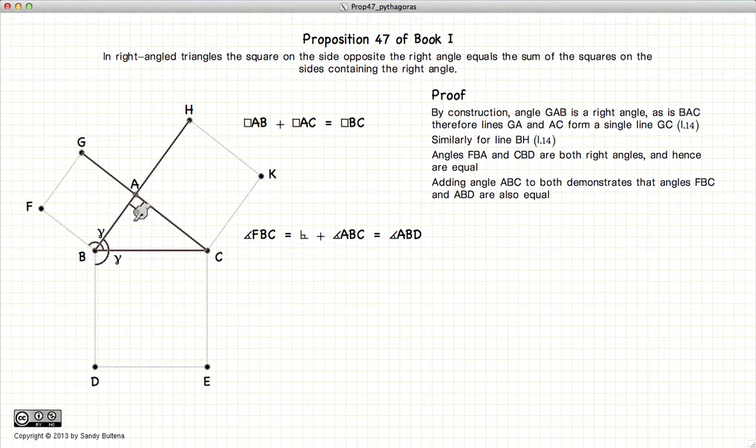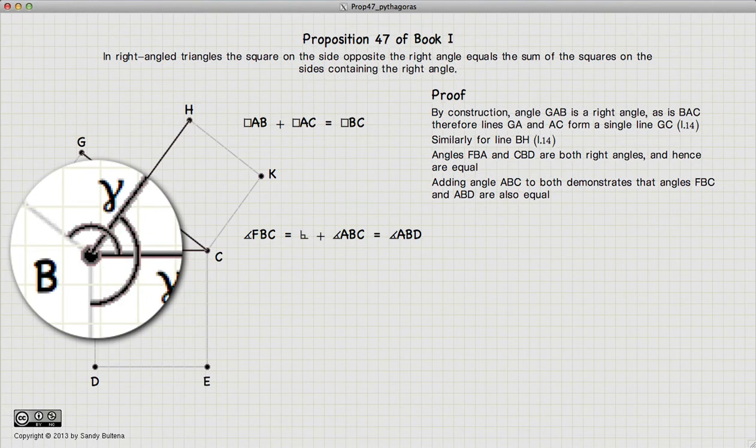Now let's look at the angles F, B, C and A, B, D. You can see that F, B, A is a square, or a right angle, excuse me, plus we have the little extra bit of A, B, C. So F, B, C is equal to a right angle plus A, B, C. Right angle plus A, B, C. So these two angles are equal.